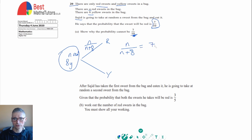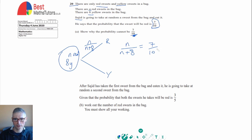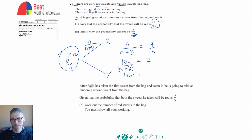We can say that n over n plus 8, if Sajid is correct, is equal to 7 out of 10. We can try to solve this equation. First, I'll multiply both sides by 10 to clear the denominator, giving 10n over n plus 8 equals 7. Next, multiply both sides by n plus 8, so we end up with 10n equals 7(n + 8).